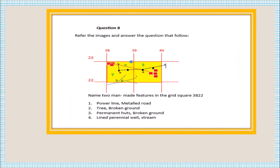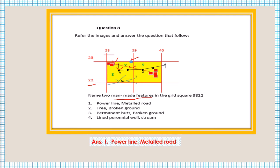Question number eight: name two manmade features in grid square 3822. Manmade features are things constructed or made by human beings. Here you can see a settlement, a power line, a metal road, and a perennial lined well. Based on the given options, the two manmade features are the power line and the metal road.